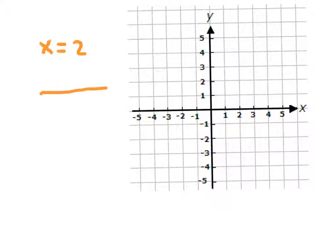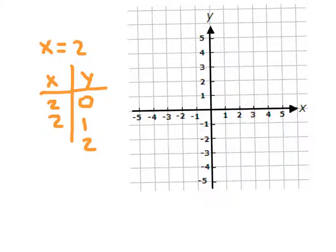Again, we'll make a function table. This time we know that x equals 2; what we don't know are the values of y. In fact, we can choose any values of y we want, like 0. When y is 1, x is still 2. When y is 2, x is still 2. Next, we list those ordered pairs: (2, 0), (2, 1), (2, 2).